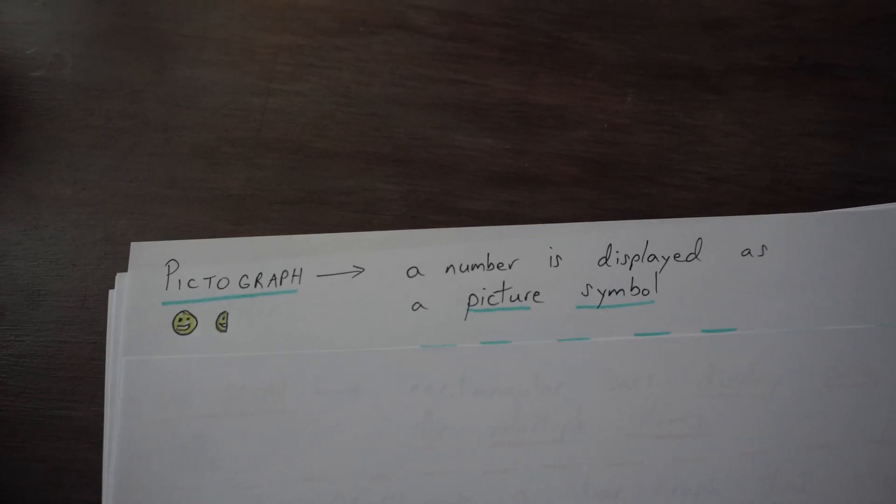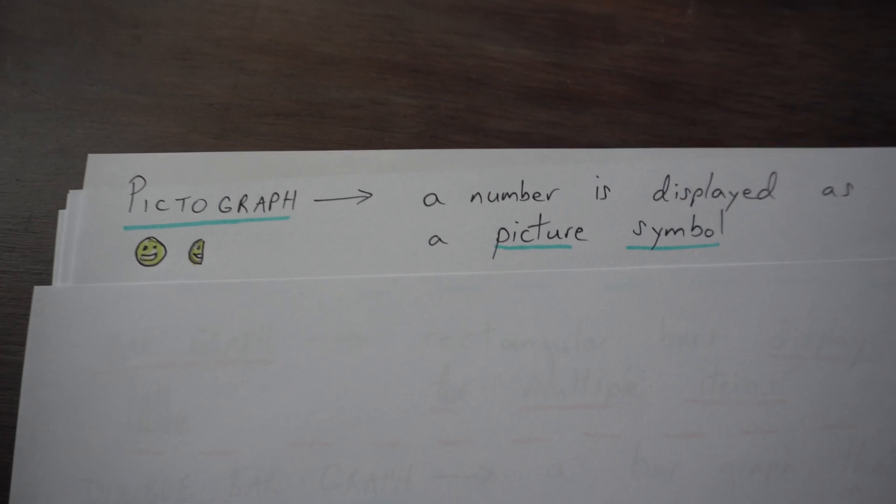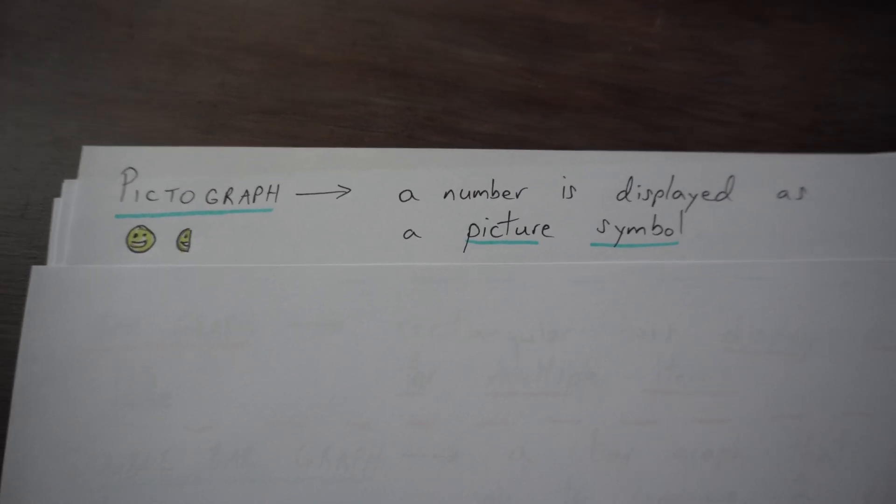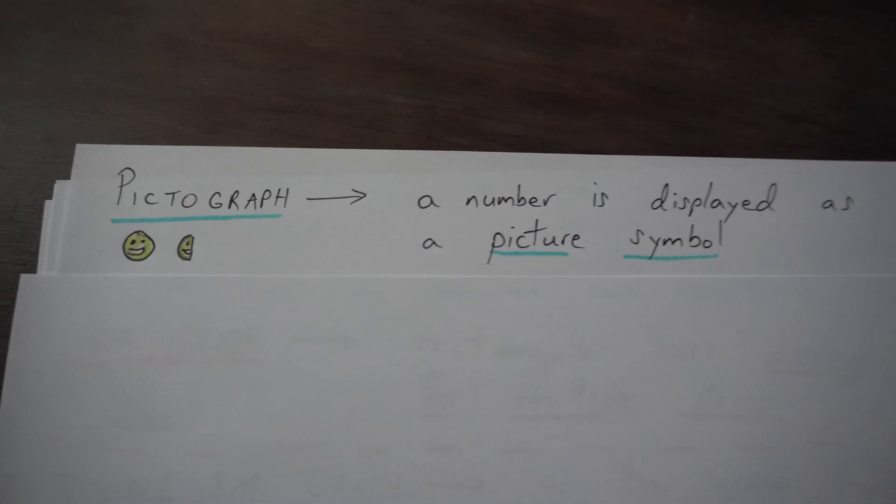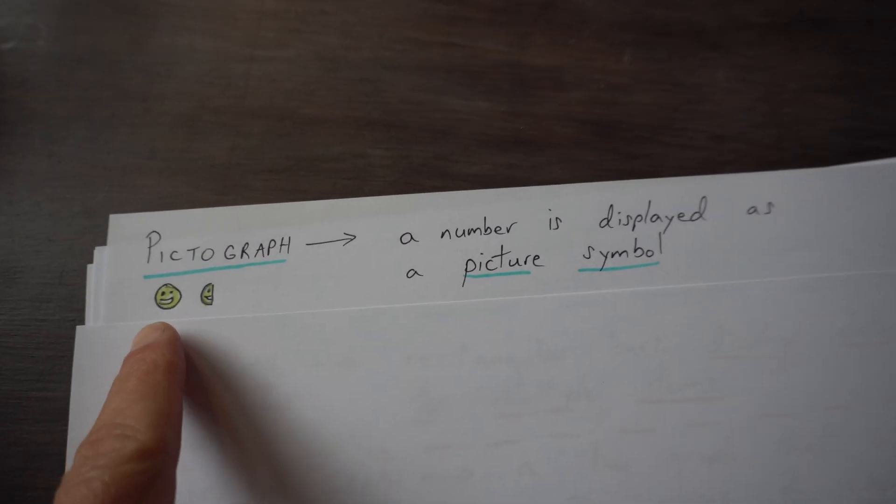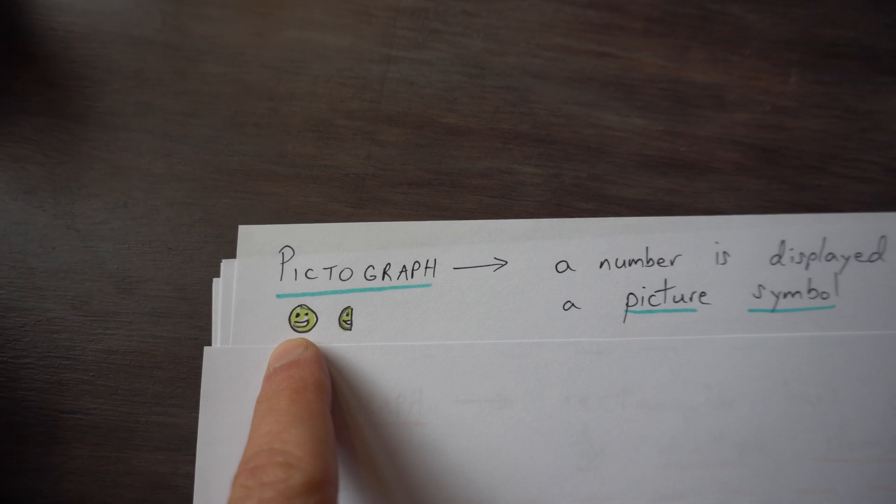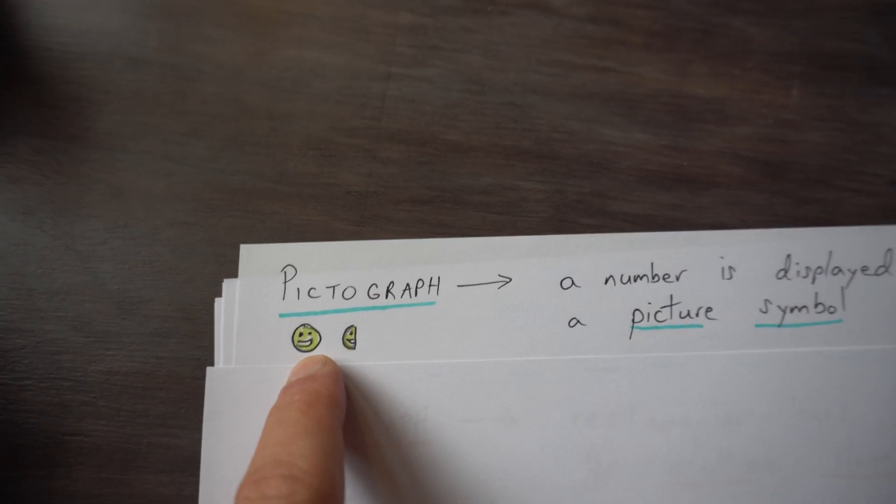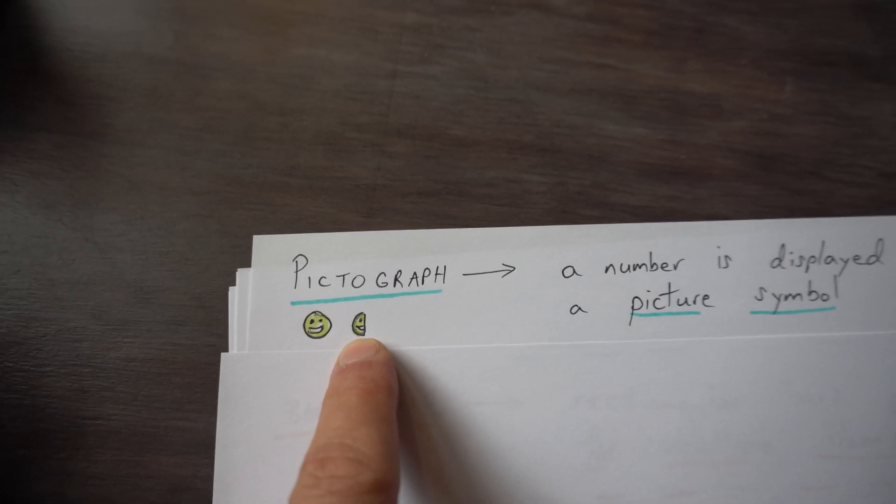The first type of graph is called a pictograph. Now this is something that you might have seen way back in kindergarten, and what it is is a graph that displays choices by using pictures. So the happy face might mean one person or two people.